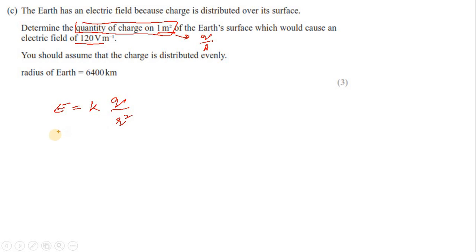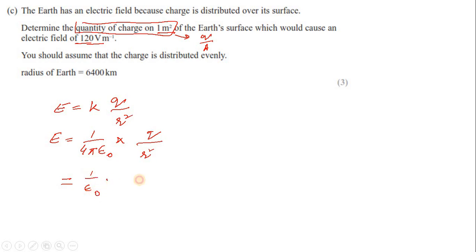E equals K times Q over R², where K is 1/(4πε₀), the permittivity of free space. Since the Earth is assumed to be spherical, we rearrange: E = (1/ε₀) × Q/(4πR²). Now 4πR² is the surface area of a sphere. So Q divided by 4πR² equals Q/A, which is the charge per unit area - exactly what we need to find.